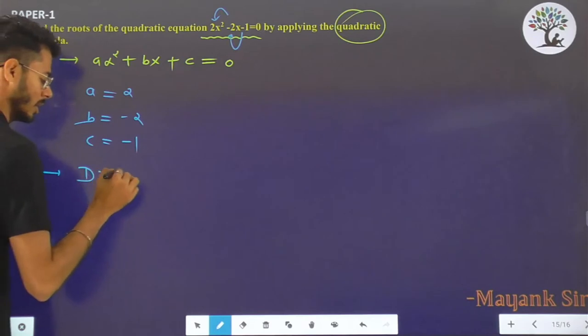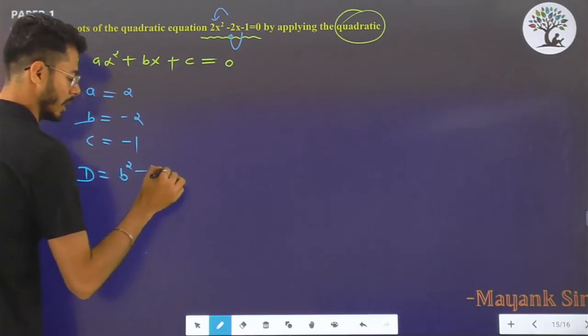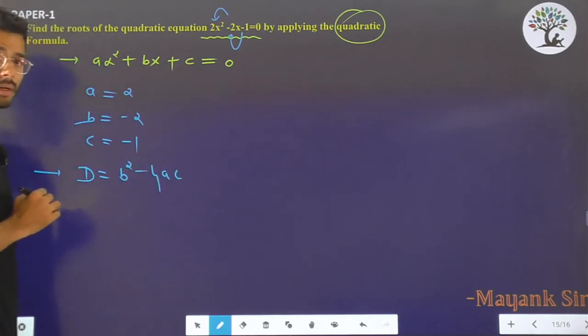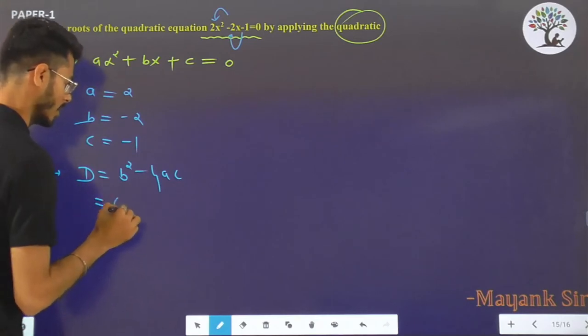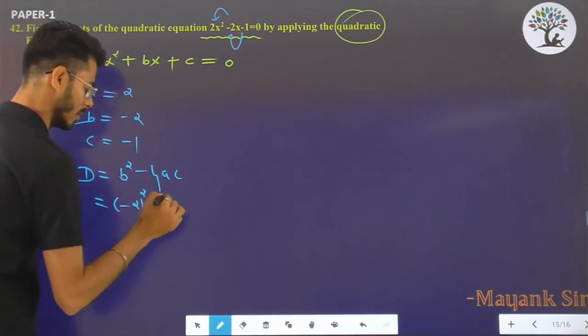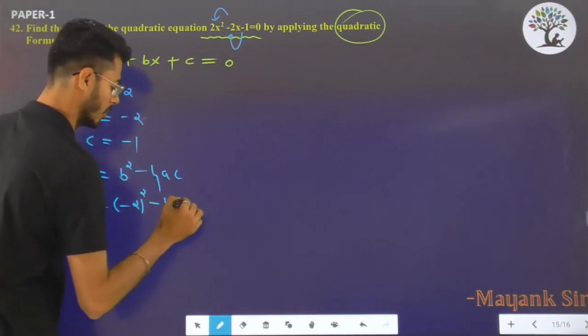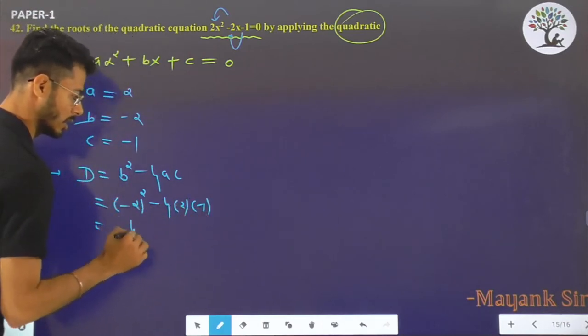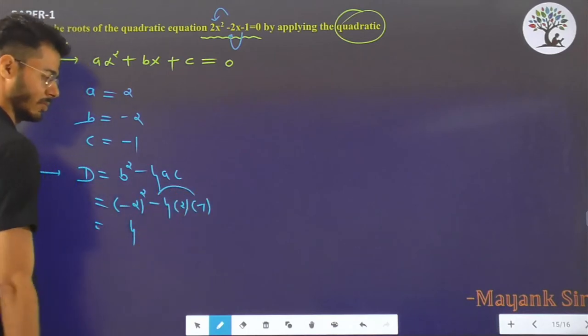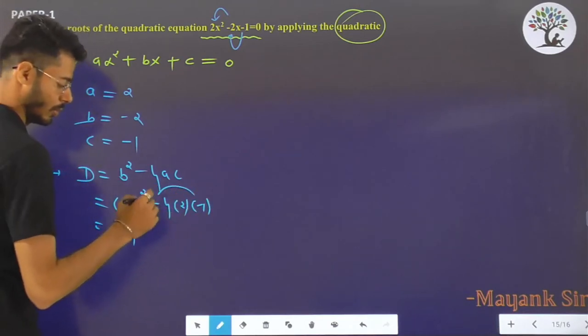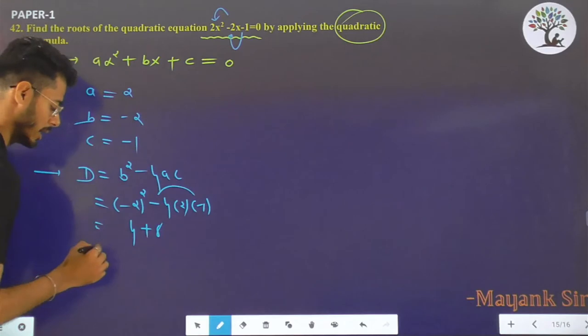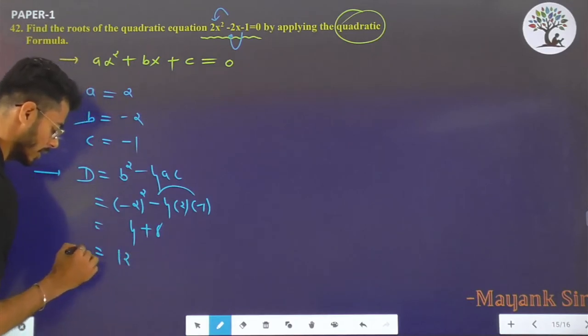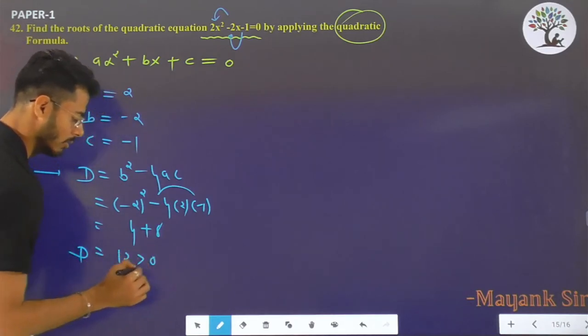First we have to find out D, the discriminant: b² - 4ac. That's (-2)² - 4 times 2 times (-1). So (-2)² is 4, minus minus plus 4, 2 times 1 times 8, that means 12. The value of D is 12, which is greater than 0.